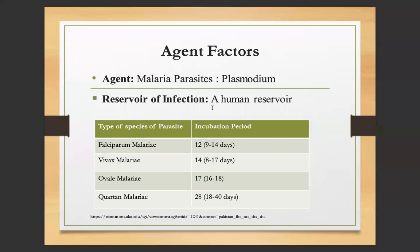Agent factors: The agents are the malaria parasites, Plasmodium, with the reservoir of infection being a human reservoir. The types of species and their incubation periods are as follows: P. falciparum has an incubation period of 9 to 14 days; P. vivax, 8 to 17 days; P. ovale, 16 to 18 days; and P. malariae (quartan malaria), approximately 18 to 40 days.